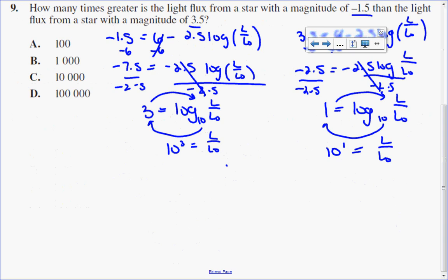To find how many times greater one is than the other, I'll divide the two ratios. So I'm going to do 10³ divided by 10¹.